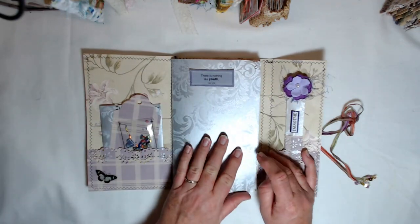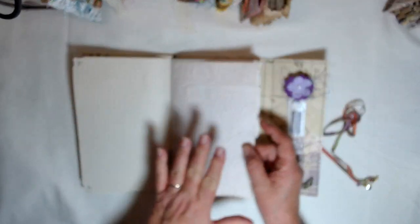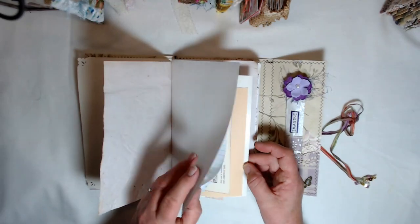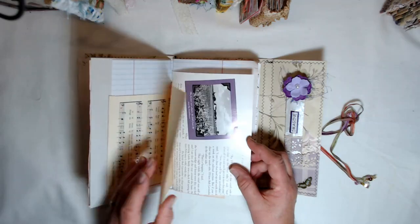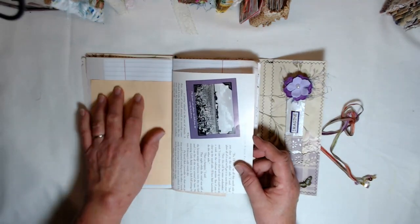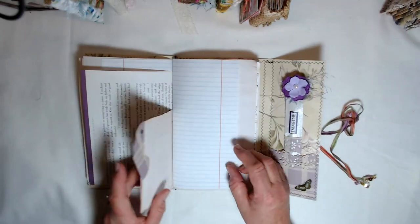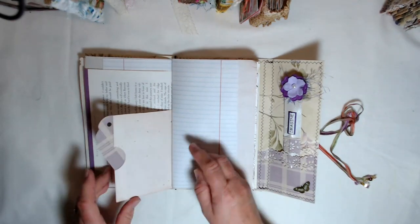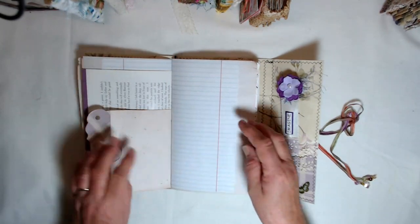This is that silk page again. Inside I have avocado-dyed papers, sketching papers, regular paper, music paper, beige—I don't know what you call that kind of paper—book papers. This is an avocado-dyed envelope; I've just cut the ends off of it and put a tag down in there.